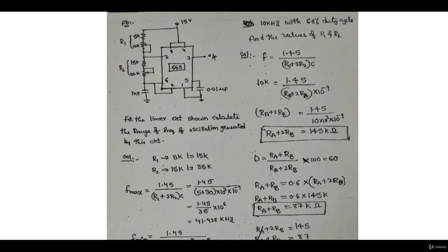Now let's look at a problem. You have a circuit with resistances R1 and R2 and a capacitor of 0.01 microfarads. For the timer circuit shown, calculate the range of frequency of oscillation. The resistor values can be varied: R1 can range from 0 to 10 kilohms and R2 can range from 0 to 20 kilohms, so we need to find the range of frequencies.